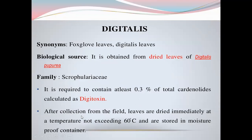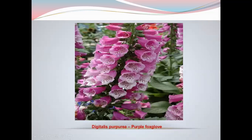After collection from the field, leaves are dried immediately at a temperature not exceeding 60 degrees and are stored in moisture-proof containers. This is the picture of Digitalis purpurea, the purple Foxglove.